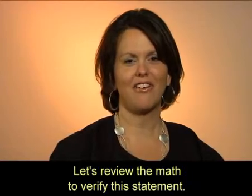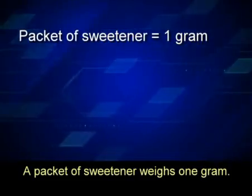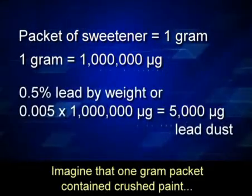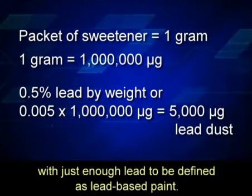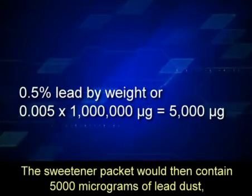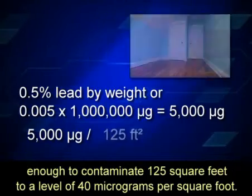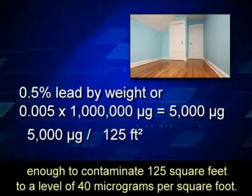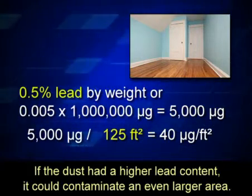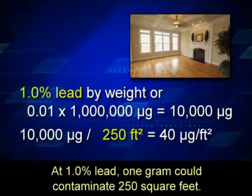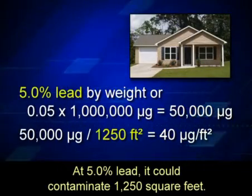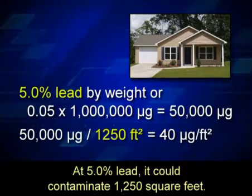Let's review the math to verify this statement. A packet of sweetener weighs one gram. One gram is the same as one million micrograms. Imagine that one gram packet contained crushed paint with just enough lead to be defined as lead-based paint. The sweetener packet would then contain 5,000 micrograms of lead dust, enough to contaminate 125 square feet to a level of 40 micrograms per square foot. If the dust had a higher lead content, it could contaminate an even larger area. At 1% lead, one gram could contaminate 250 square feet. At 5% lead, it could contaminate 1,250 square feet.